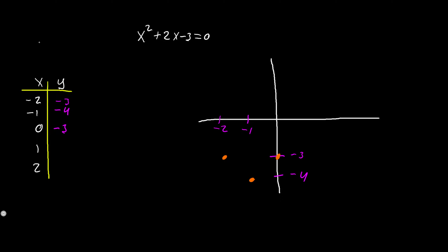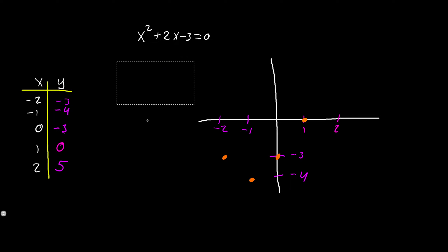We're going to continue plotting the points for x = 1 and x = 2. When x = 1 we get 1 + 2 - 3, which gives us y = 0 — that's a solution to our quadratic. When x = 2 we get positive 4 + 4 - 3, which is equal to 5.